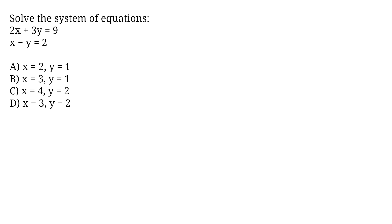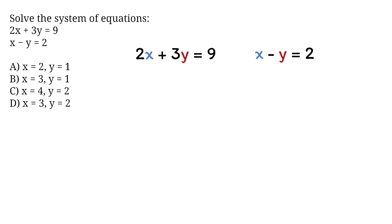There are several good ways to solve this question — you can watch our video on simultaneous equations for that. On the GED math, the best way to solve this question is by checking which of the multiple choice answers satisfy both equations. I always start with the equation that is easy, so I'll look at x minus y equals 2.